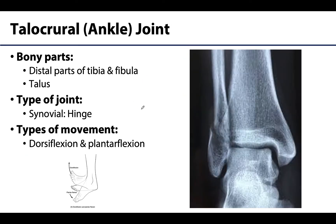Now let's talk about the ankle joint, or the talocrural joint. We're looking at a radiograph here — you can see there's a bit of a fracture at the lateral malleolus, but we're focusing on the bones. The bones articulating to form the talocrural joint are the distal part of the fibula, the tibia — which plays a big role both at its medial portion and along its entire bottom portion — and lastly the talus, which is the superior-most tarsal bone.